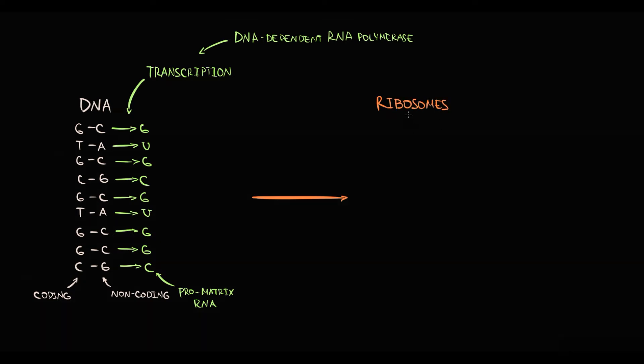Ribosomes read nucleotide sequence in pre-matrix RNA molecule in codons, and include complementary to that codon amino acid.